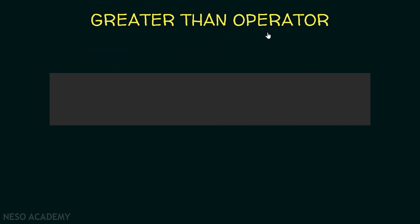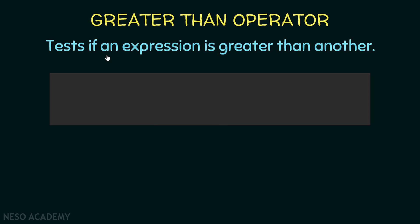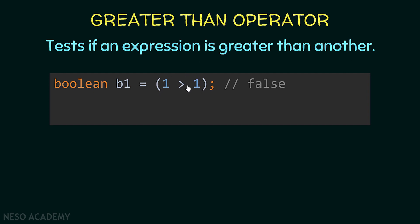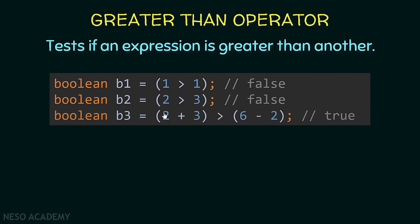Now let's see the greater than operator. It is used to test if an expression is greater than another expression. I'm testing if one is greater than one — this is false because one is not greater than one. Testing if two is greater than three is also false. Finally, testing if (2 + 3) is greater than (6 - 2): this is true because five is greater than four.